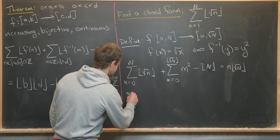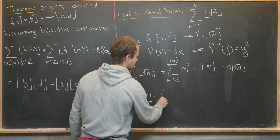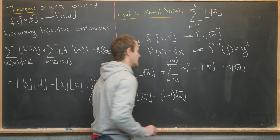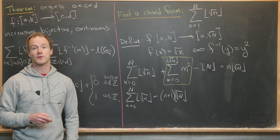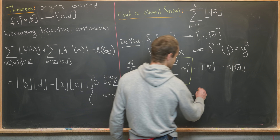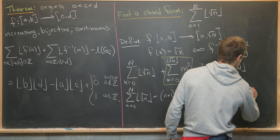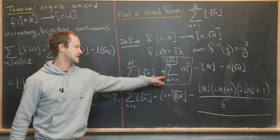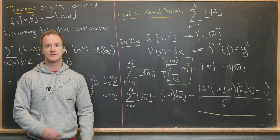Rearranging to solve for our goal: the sum from n = 0 to N of floor(√n) equals (N + 1)·floor(√N) minus the sum from m = 0 to floor(√N) of m². Using the standard closed form for the sum of perfect squares, this becomes floor(√N)·(floor(√N) + 1)·(2·floor(√N) + 1) / 6 subtracted from (N + 1)·floor(√N). So we do obtain a closed form — and that's a good place to stop.